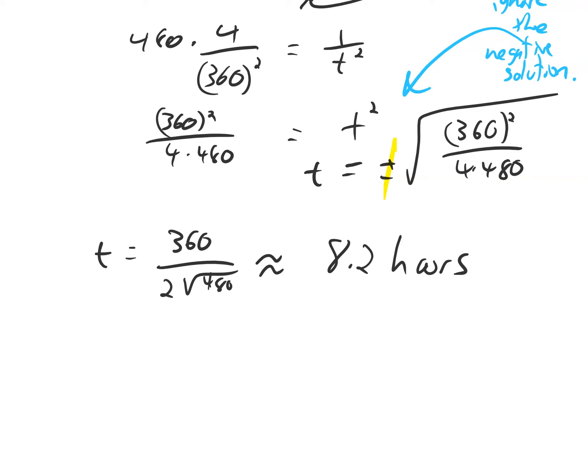We're not done. We found that the time is 8.2 hours, but that's not what the question was asking. The original question was, what's the speed? Not what's the best time, but these things are related. We know that 360 equals the time, 8.2, times the speed, which is written as V in this case. So we can just divide both sides by 8.2 and get the velocity is approximately 43.9 miles per hour.